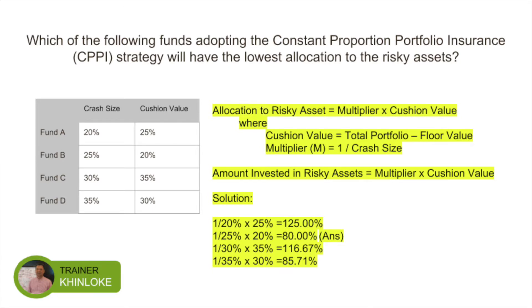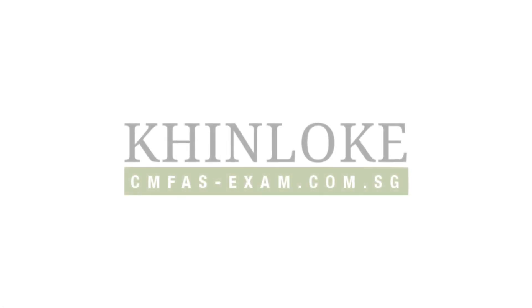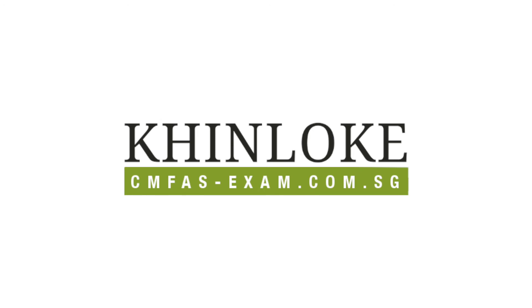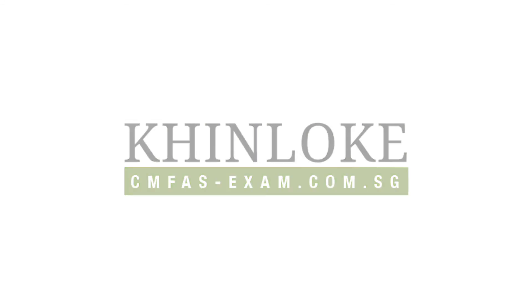You can see from the calculations that Fund A has got 125% and Fund B has got only 80%. Therefore, the answer to this question is B, 80%.